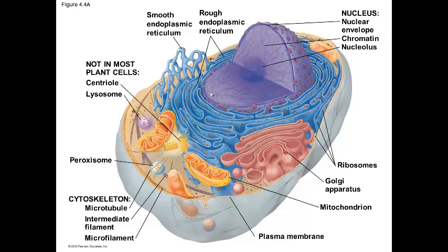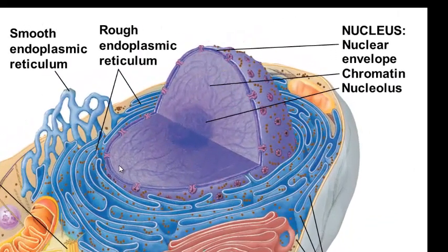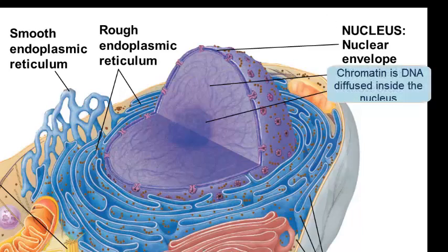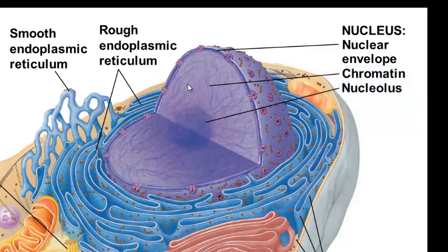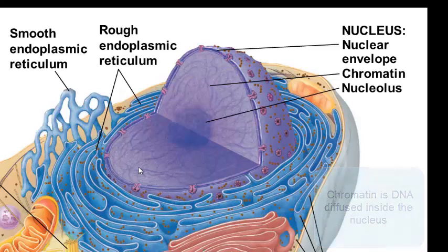It controls the cell's activities. Here in the generalized animal cell, we can see the nucleus as a spherical organelle containing two main components: chromatin and the nucleolus. Chromatin is this dispersed stringy material that you see within the nucleus. It is a less coiled form of DNA. When this chromatin coils up into bodies, we call those bodies chromosomes. But when the cell is not dividing, we usually don't see chromosomes, so the chromatin is the form of DNA that we see in the nucleus.